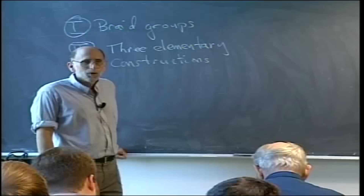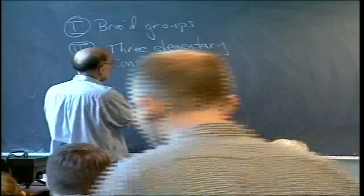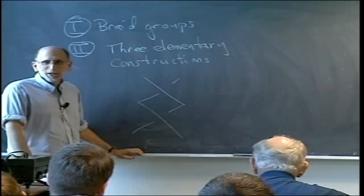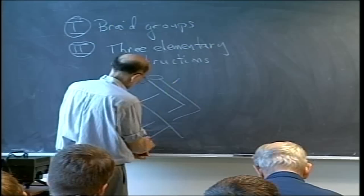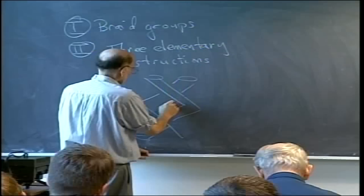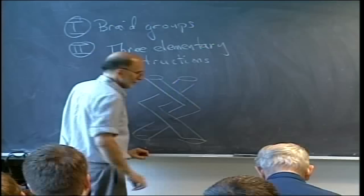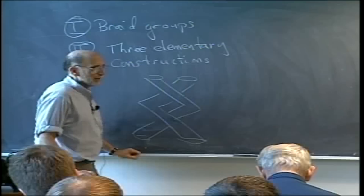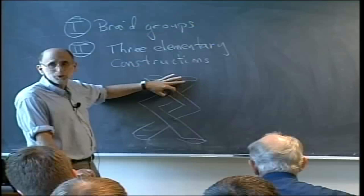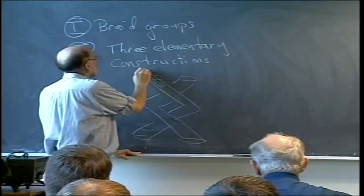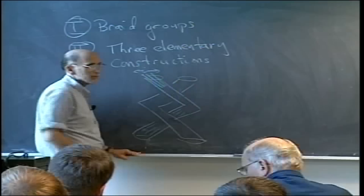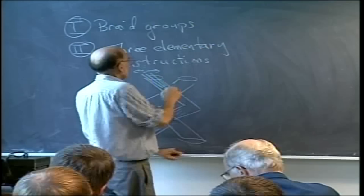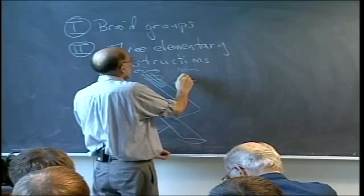Let's draw a picture of a braid, a non-trivial braid. Here's a good example: a two-stranded pure braid which is of course non-trivial. Now what I'd like to do is think of this as braiding tubes, so I'll thicken up the strings. The first elementary construction is to insert an i-stranded trivial braid in the first tube, and then you could imagine putting in an N plus 1 minus i-stranded trivial braid in the second tube.